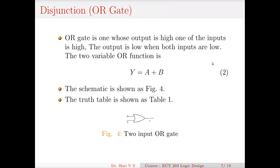The next gate is the OR gate — this is the disjunction operation, either OR. The distinction means either one or the other. Like: either I or my friend will come and take the class — if one of us comes, the class will happen; if both come, the class will happen; if neither comes, the class will not happen. That is the idea of an OR gate. An OR gate is one whose output is high if one of the inputs is high. The output is low only when both inputs are low.